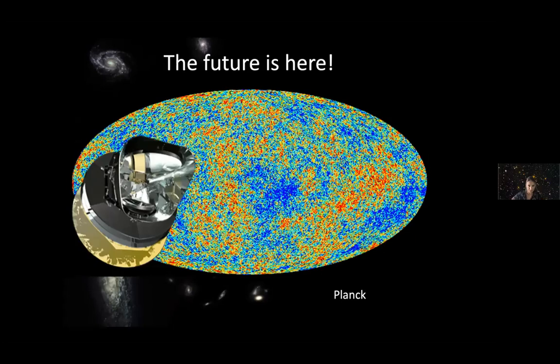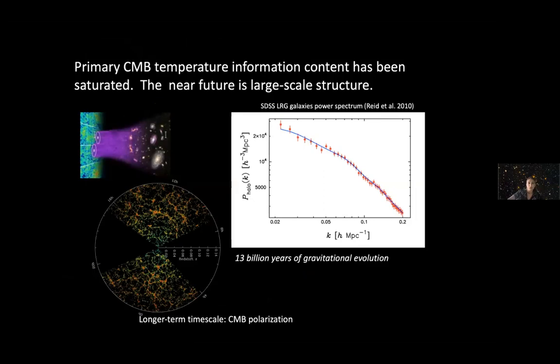The Planck mission has produced a map of the temperature of the cosmic microwave background, which is our ultimate experiment. The information content of the primary temperature fluctuation of the cosmic microwave background has been saturated. But this doesn't mean it's the end of the road. There is the polarization that is very important, and secondary effects to be explored.